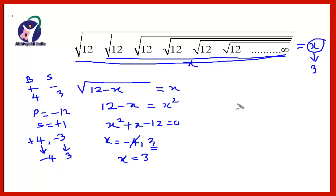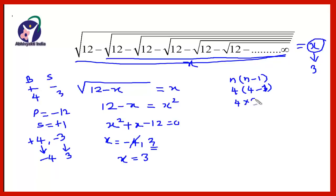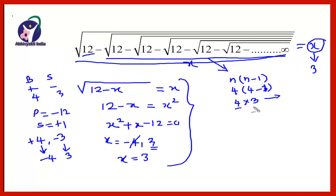But friends, if you observe this question, you will see that 12 can be written in the form n times (n minus 1). It is 4 times (4 minus 1), which is 4 times 3. Remember, these two numbers should be consecutive. So if the given number can be written in the form n times (n minus 1), you can directly write the answer. Since this is a minus sign, you take 3 — the smaller of the two numbers — as the answer. So x equals 3.